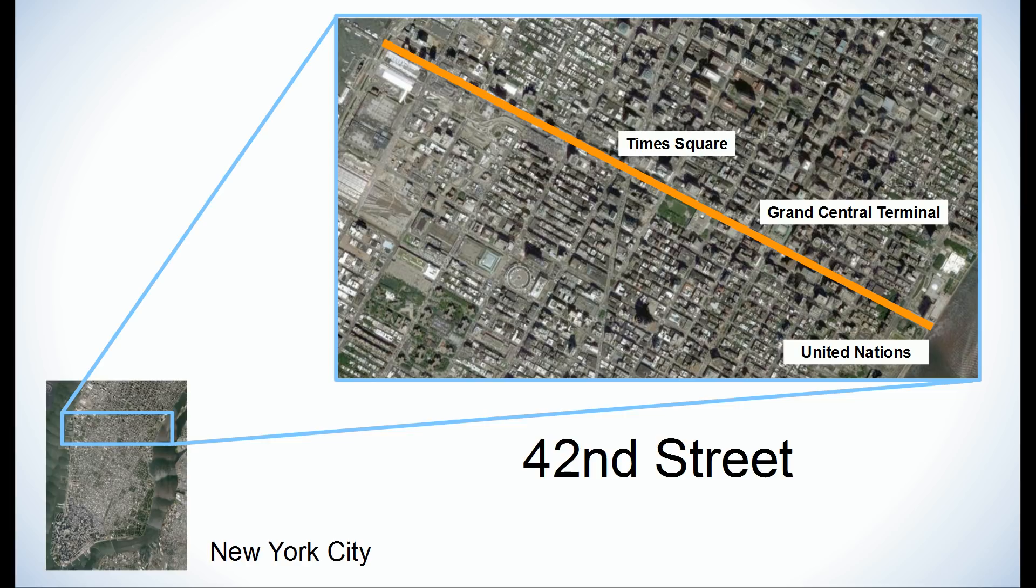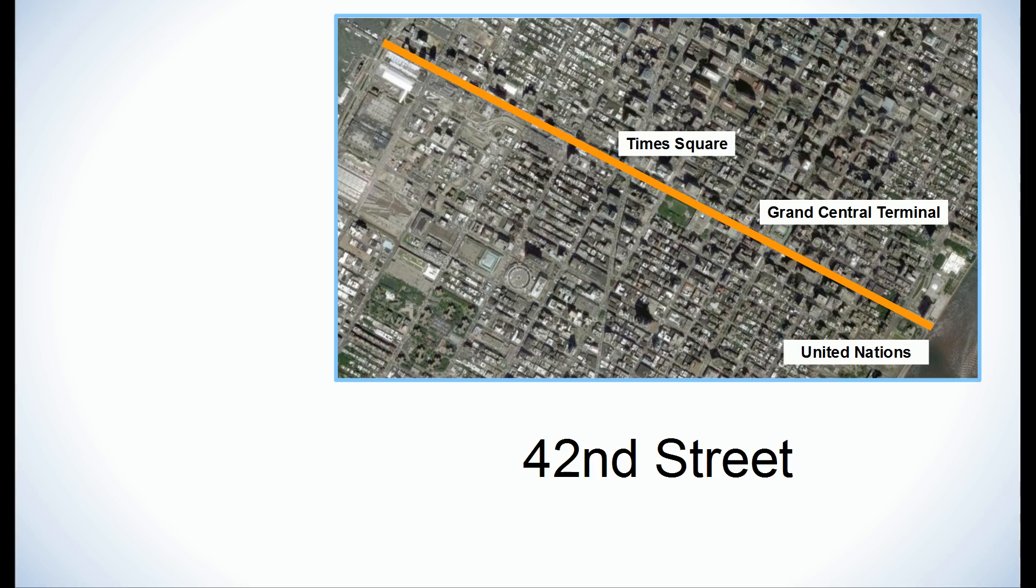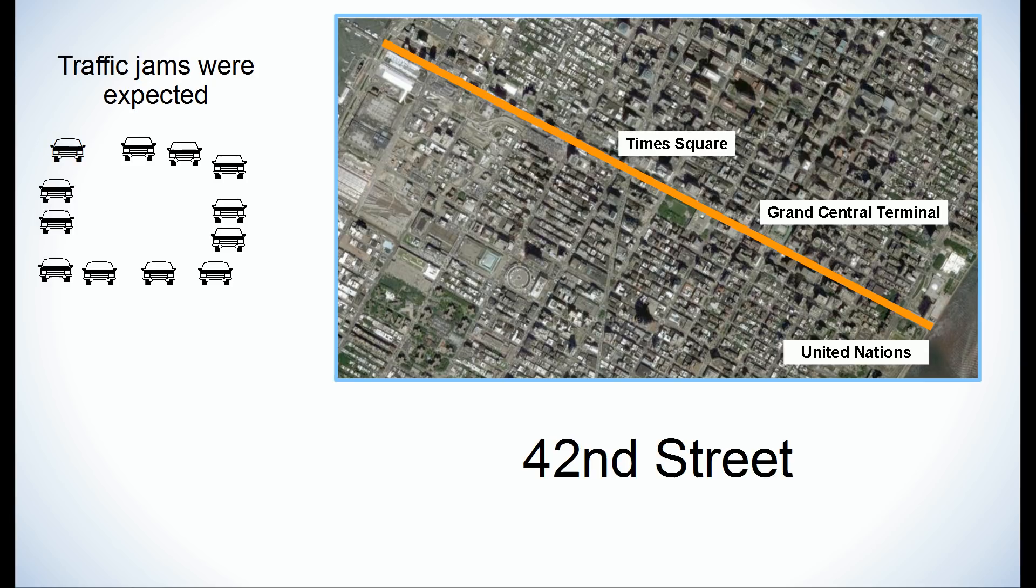On Earth Day in April 1990, New York City closed 42nd Street. The road closure was expected to cause a nightmare of gridlock and traffic jams. But nothing of the sort happened.